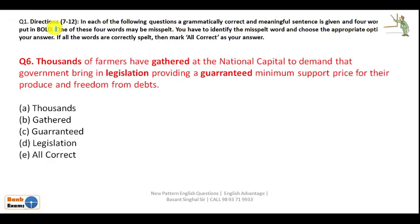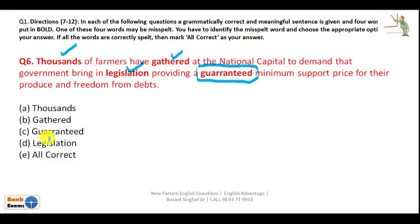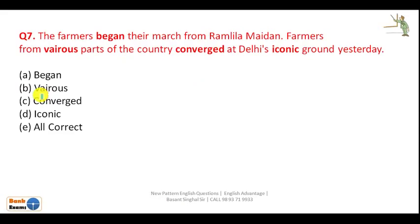This is the second category of question, which is common in all banking exams — particularly in bank clerk exams. One sentence is given with four words in bold, and one of those words may be misspelled or inappropriately used. You have to identify that word. In this question, 'thousands' is correct, 'gathered' is correct, 'legislation' is correct, but 'guarantwd' — G-U-A-R-A-N-T-W-D — is misspelled. The answer is C: 'guaranteed.'